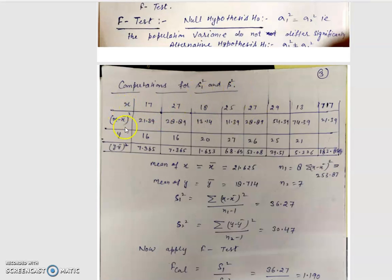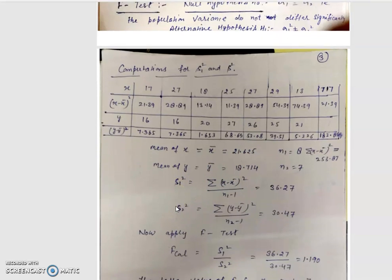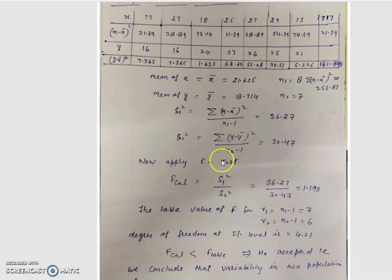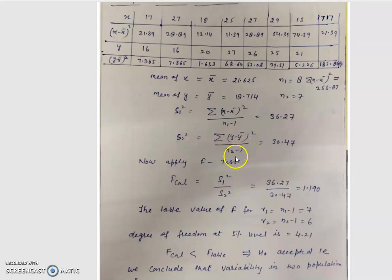This is x, from which we find x-bar, and this is y, from which we find y-bar. First, find the mean of x and mean of y: x-bar is 21.625 and y-bar is this value. The value of s1² is sigma of (x minus x-bar)² upon n1 minus 1, and s2² is sigma of (y minus y-bar)² upon n2 minus 1. We find both these values; s1² is greater than s2².